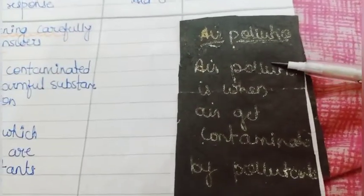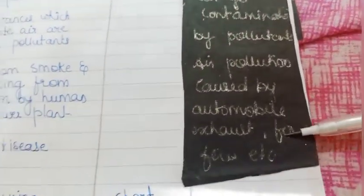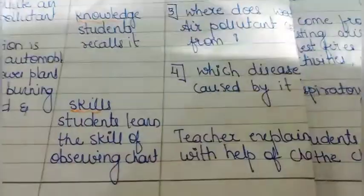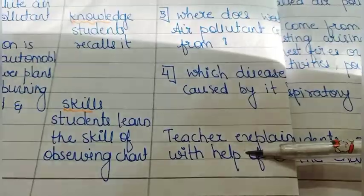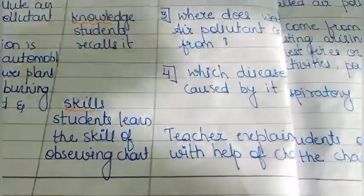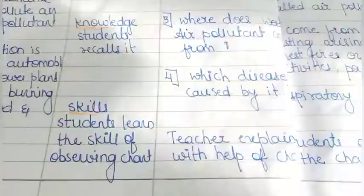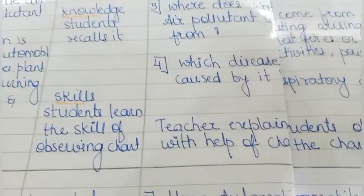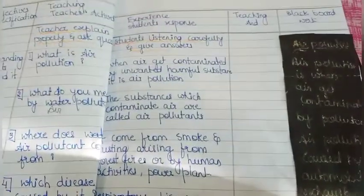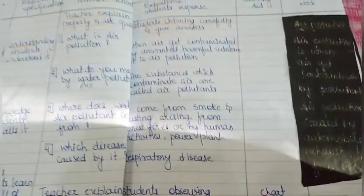Here is the blackboard work. After explaining them properly, the teacher has to explain again with the help of teaching aids — like a chart or model, whatever we have. Students observe the chart or model, and here in teaching aids you can see the chart or model overall.